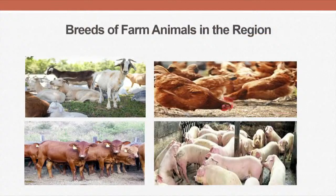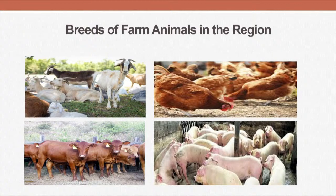We now want to look at some pictures of the breeds of animals and the classes of animals that we rear in our region. For today, students, I want to focus on breeds from our goats, our poultry, our cattle, our pigs, our sheep, and also rabbits. You are seeing pictures there of the breeds we have in our region — both indigenous breeds and exotic breeds.